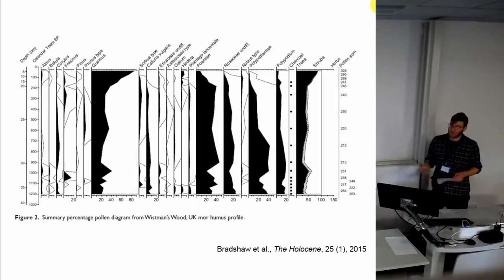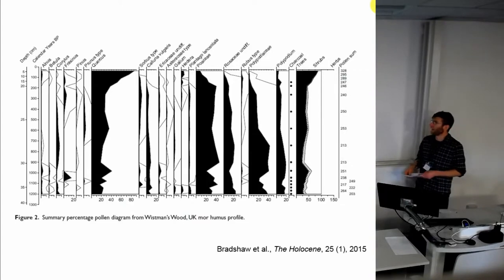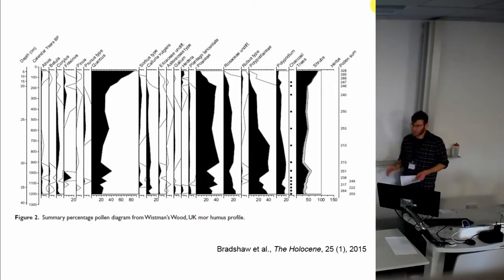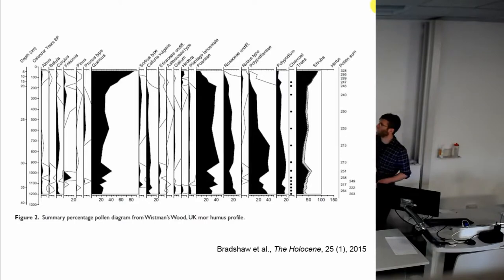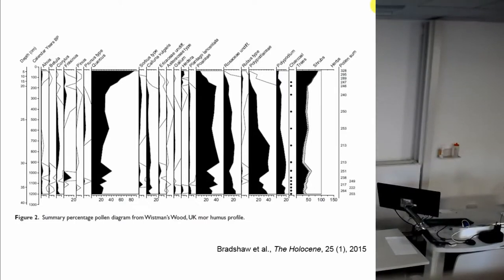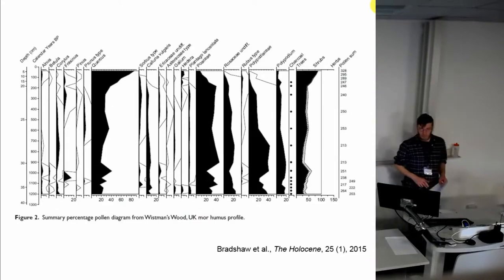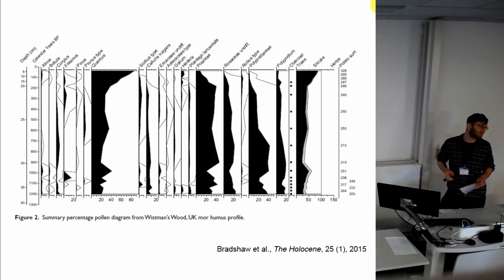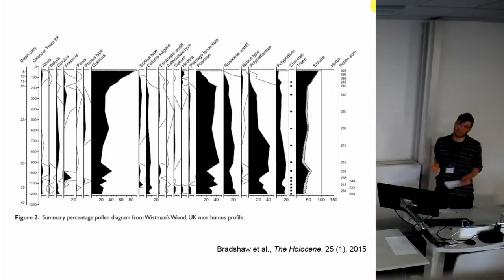It went through periods of change, and that has conservation implications. It's a fantastic paper. But this is a fairly standard pollen diagram, low resolution. You have large periods in the middle with the dominant tree species, the oak, not really changing. So we can't really say anything about what's happening there — it's just stable. It is what it is.